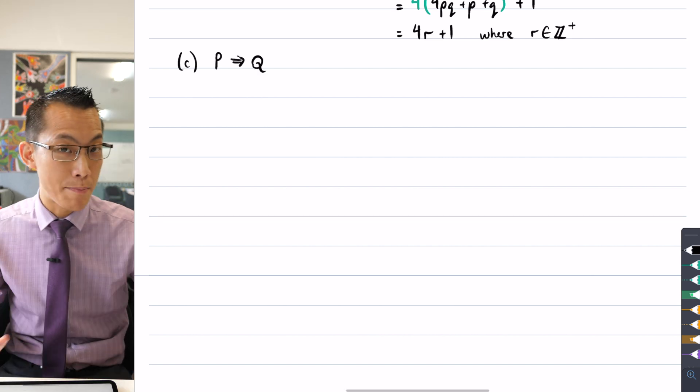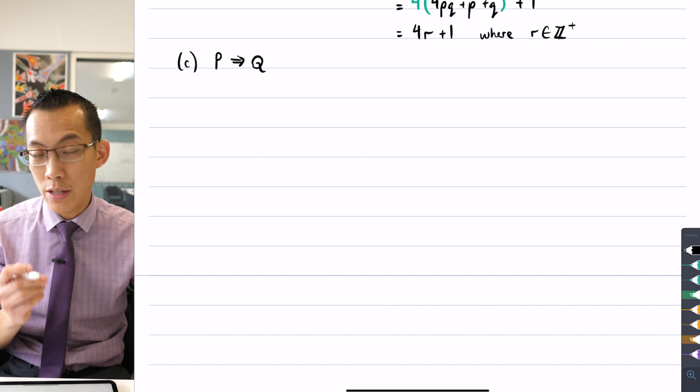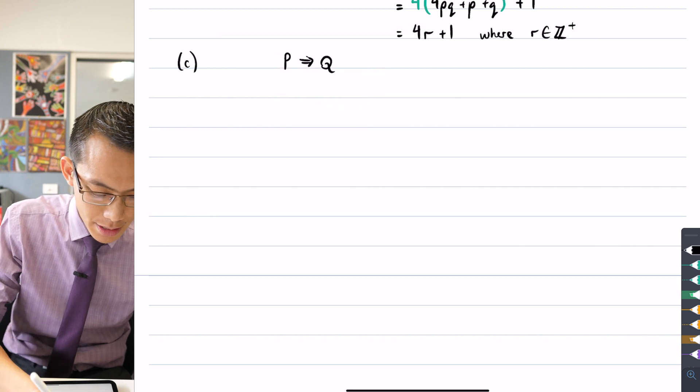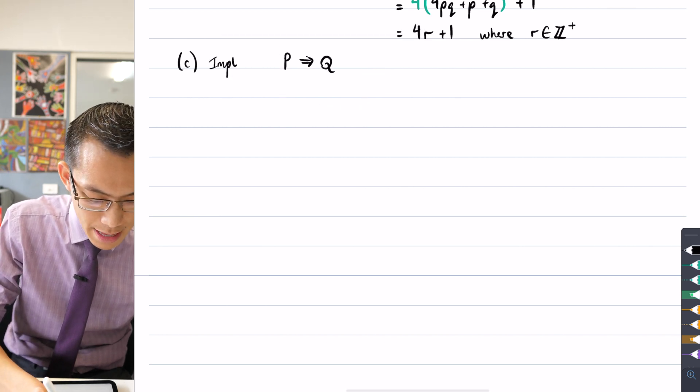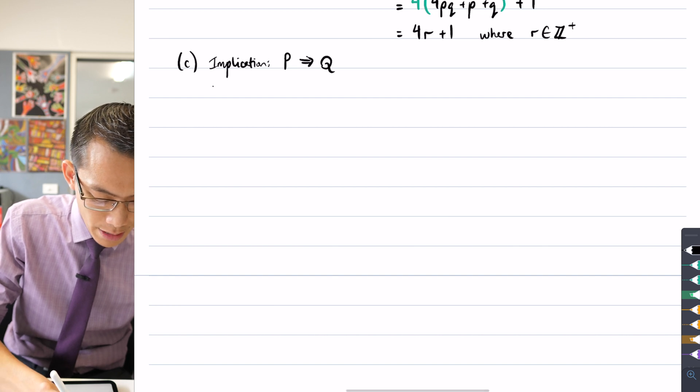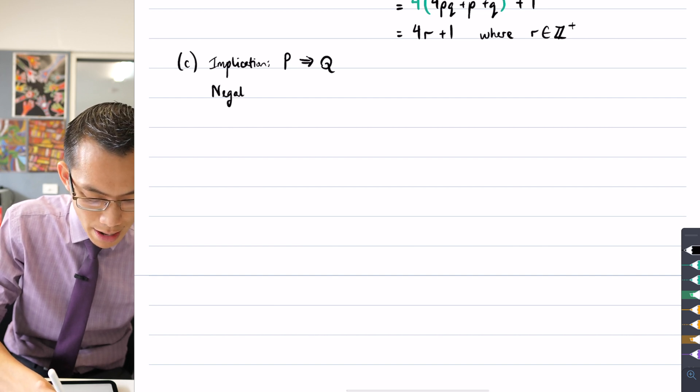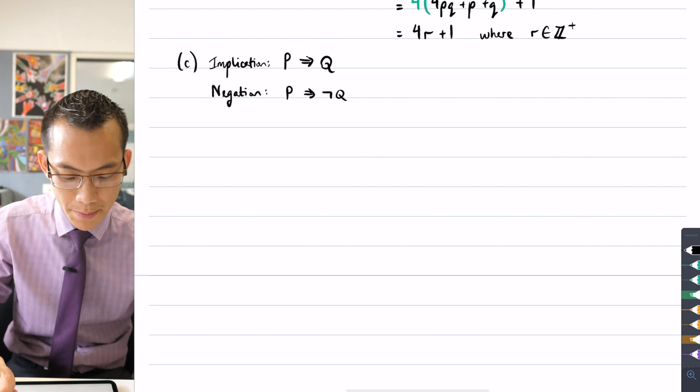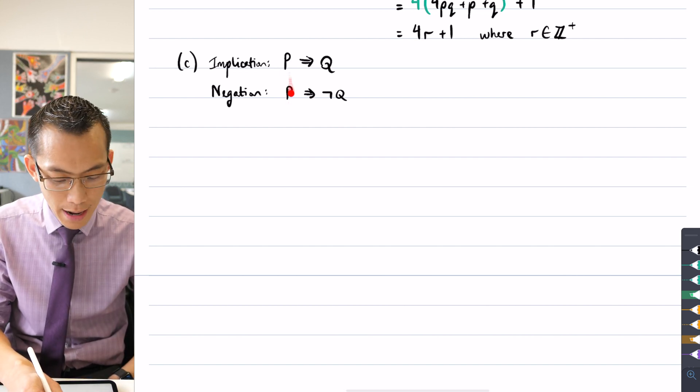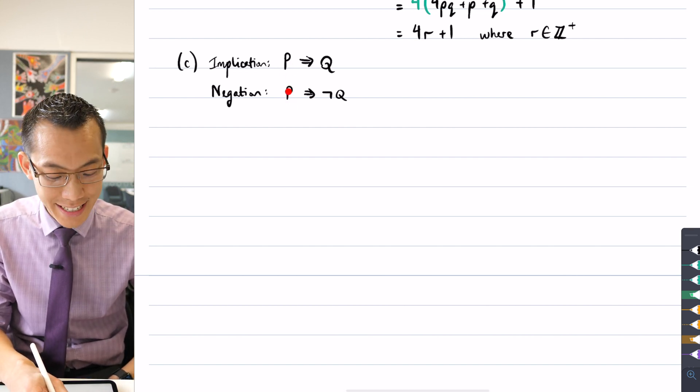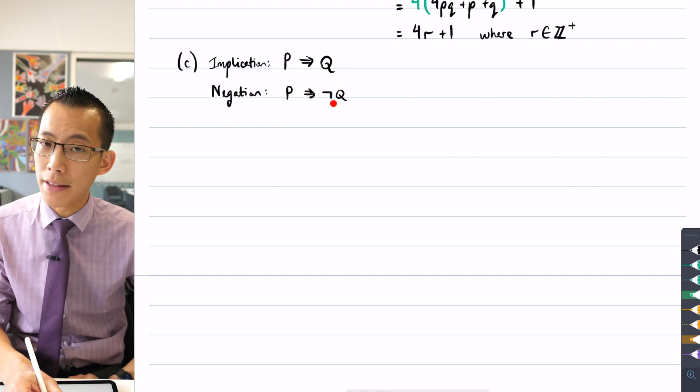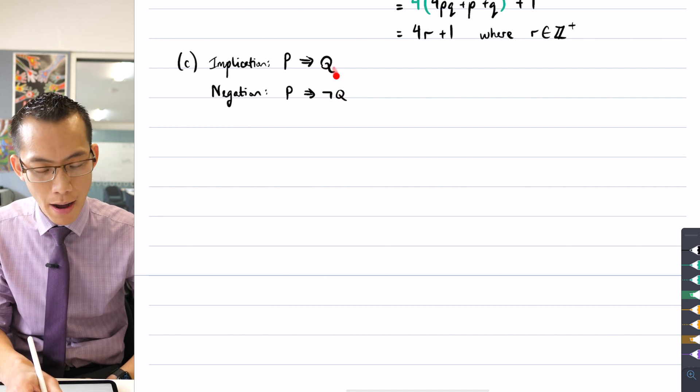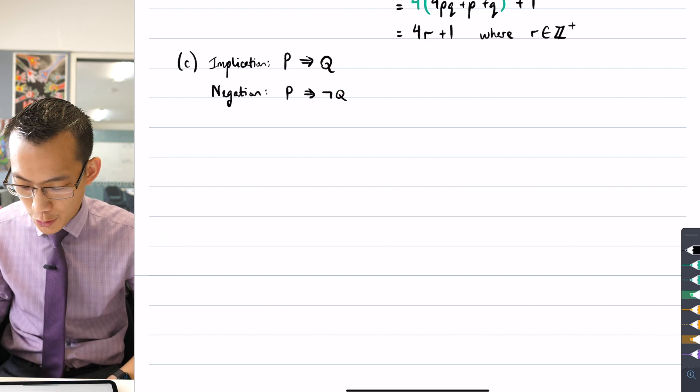That's every implication is of this form p implies q, and the reason why I like this is because if this is what the implication looks like, if this is the implication, then the negation can be written as p implies not q. So the order stays the same, the first part, the antecedent stays the same, but the implication is the part that goes opposite. Sorry, not the implication, the consequent, the second part of this implication.